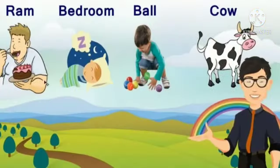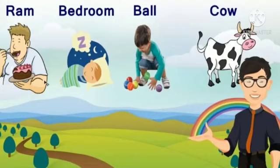Let's have a look at some other nouns. We have a picture. Look at this picture. Here, Ram — Ram is a name of a person, that is a noun. Bedroom, ball, cow — all these are also called nouns.